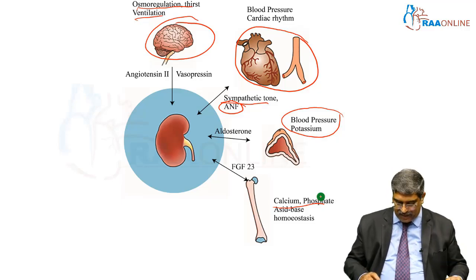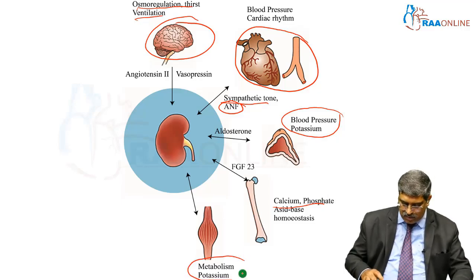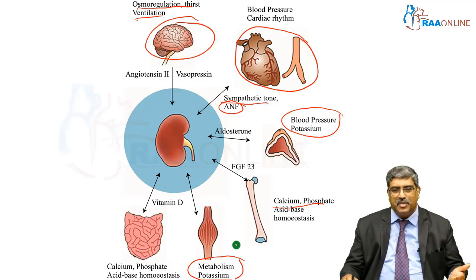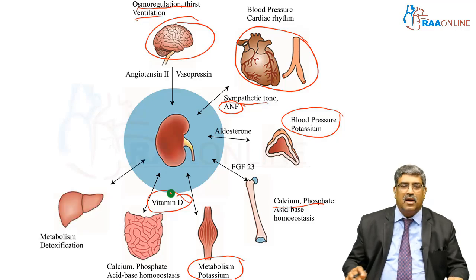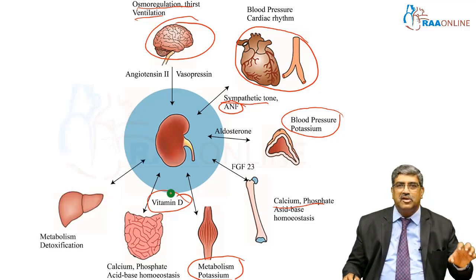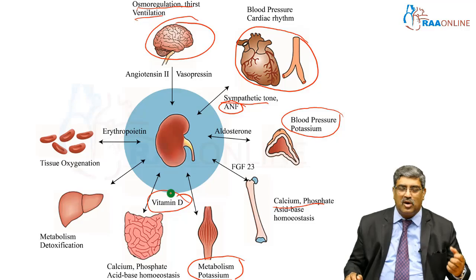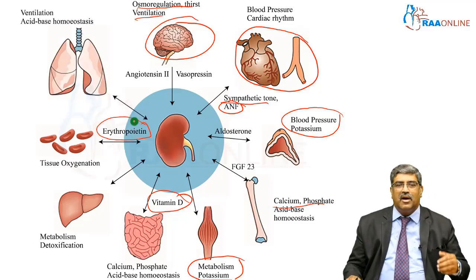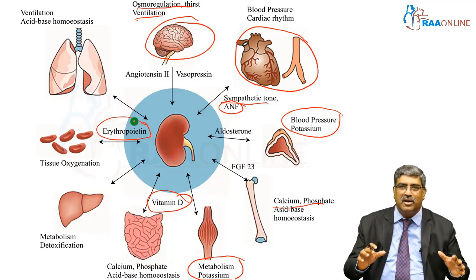This is altered by fibroblast growth factor. With muscle metabolism, potassium can be altered. Through the intestine, calcium, phosphate, and acid-base homeostasis can be altered through vitamin D. Along with the liver, metabolism and detoxification of toxins and drugs can happen. With the hematopoietic system, tissue oxygenation is regulated through erythropoietin, and along with the lung, ventilation and acid-base homeostasis can be altered.